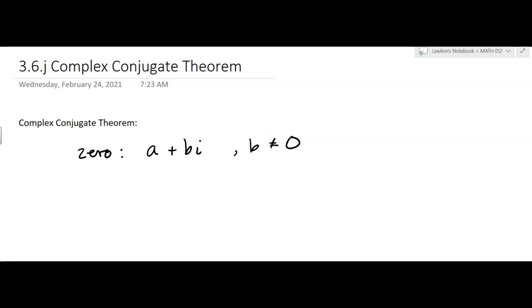Okay? So if you have a zero that's a plus bi, then the conjugate is also a zero. a minus bi is also a zero.